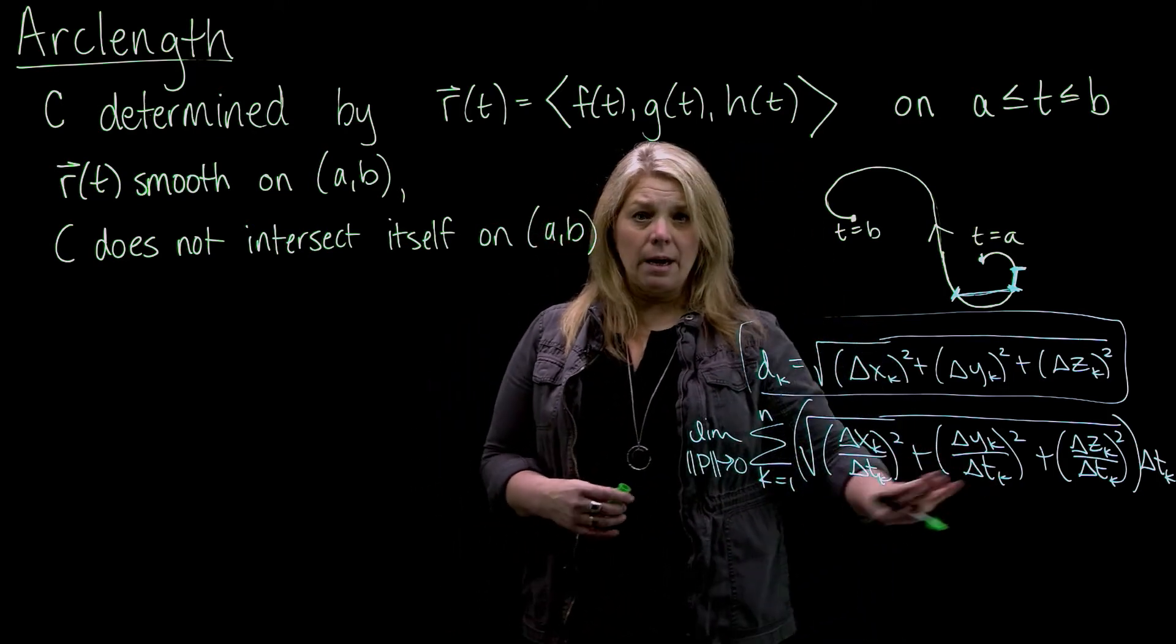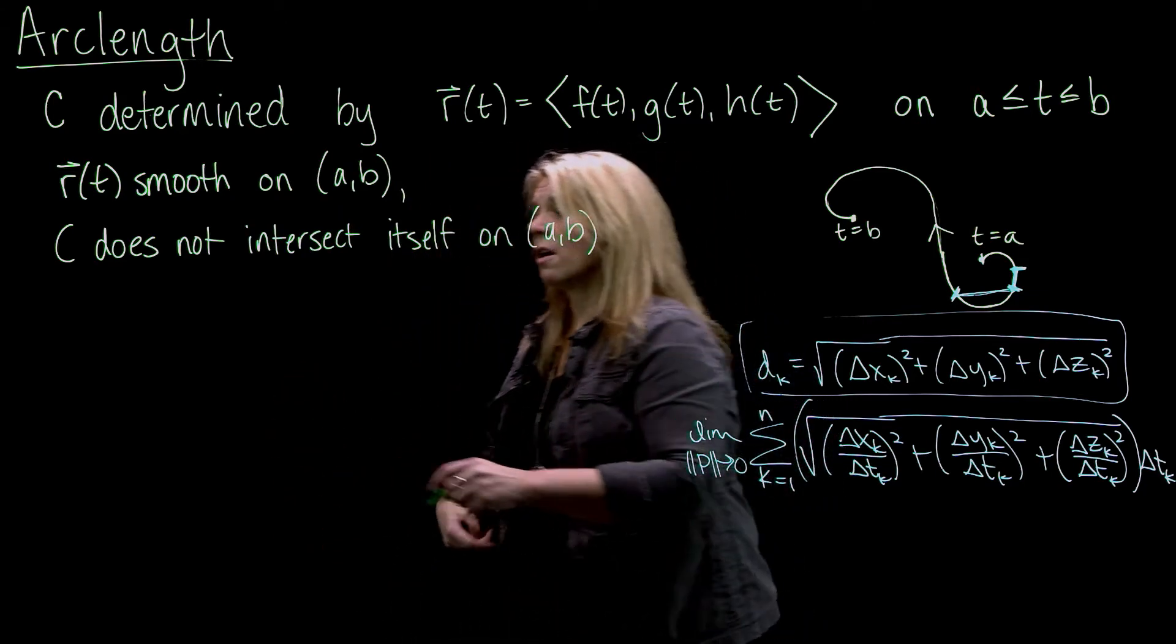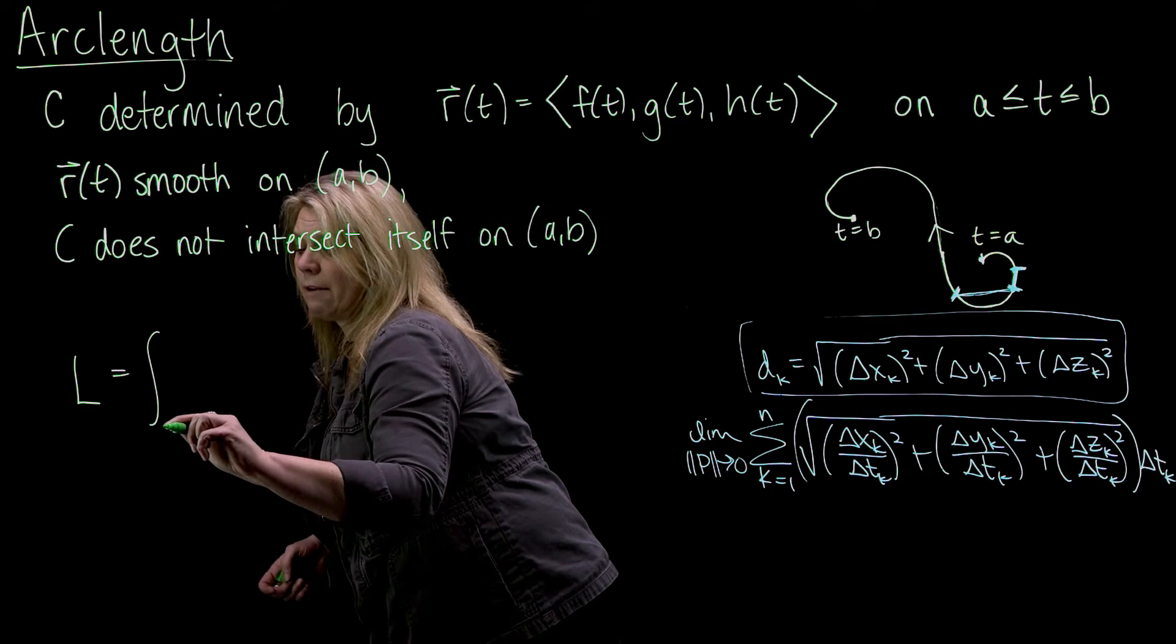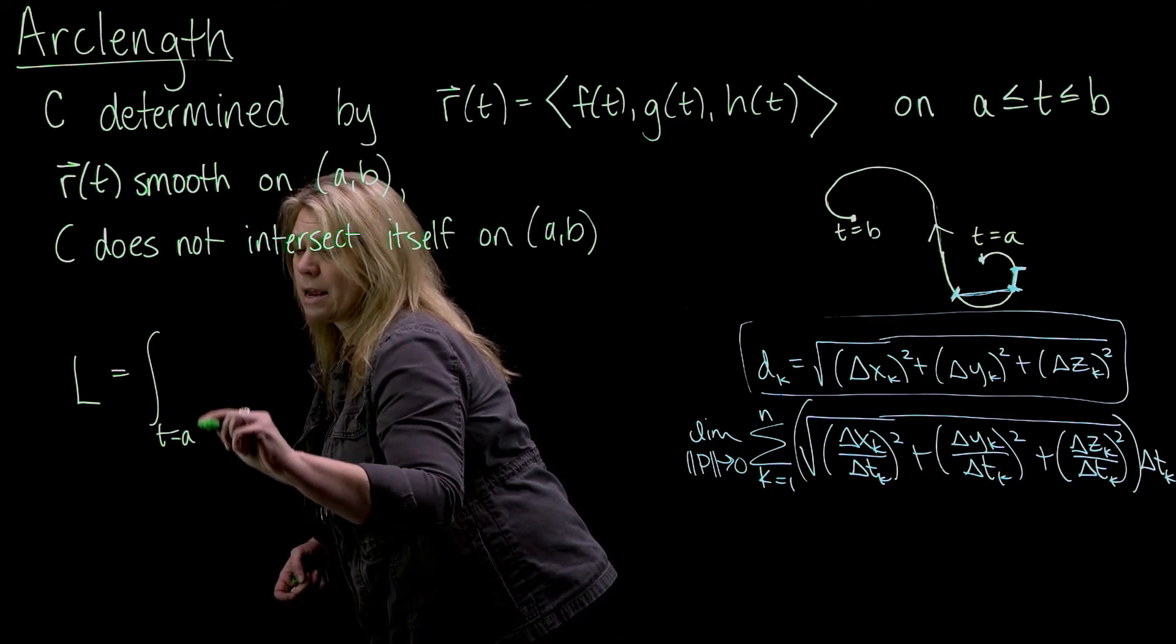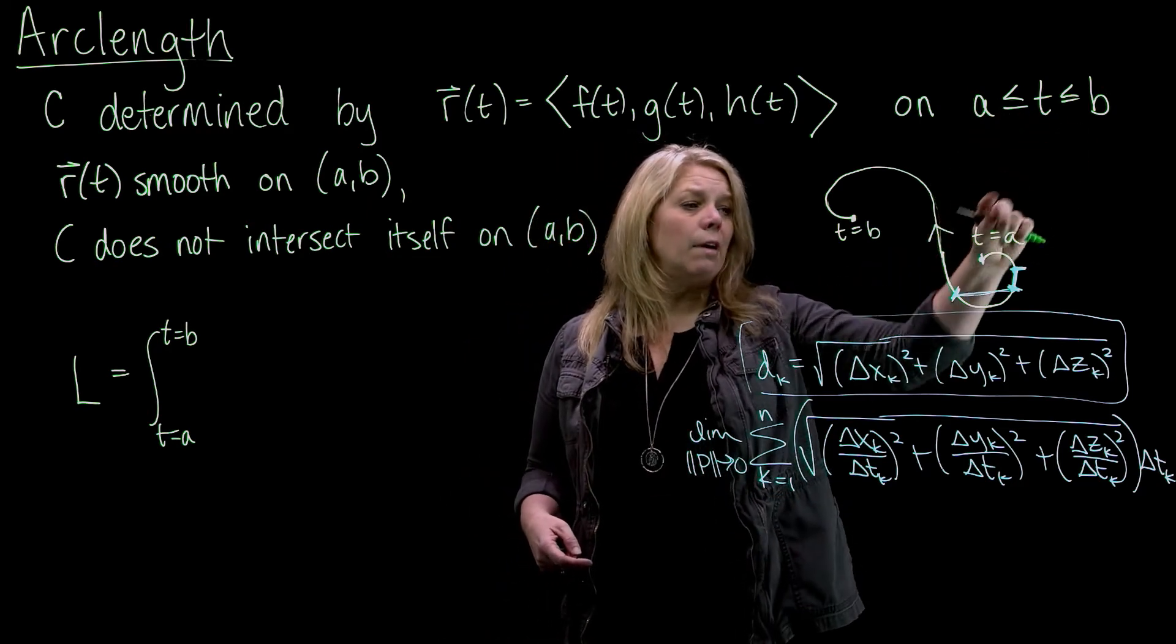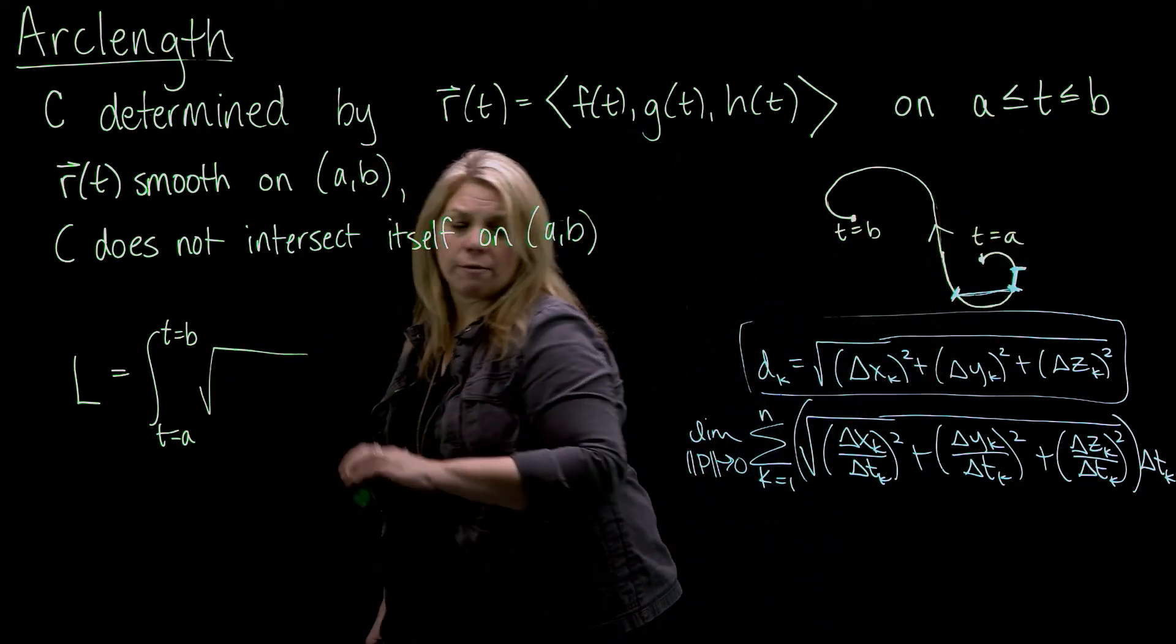We have a Riemann sum here. So our arc length formula is going to be an integral. I'm going to use L for arc length. And I'm going to integrate from t equals a to t equals b. That would be our starting and ending values corresponding with our curve here. And then the integral formula here.